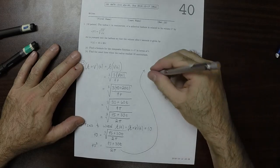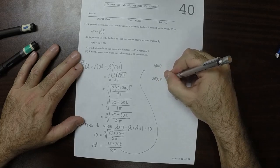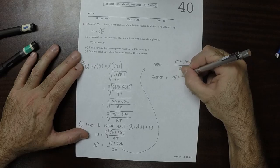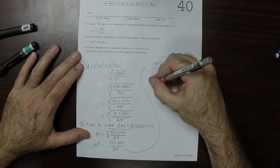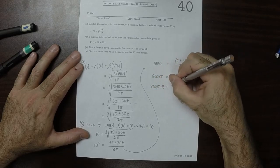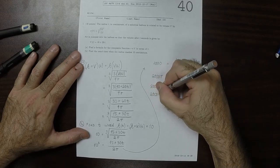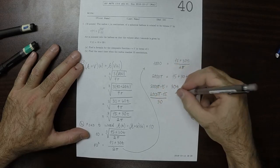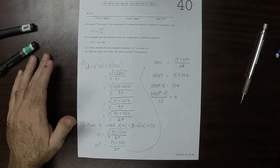So 2000 pi is 15 plus 30T. So 2000 pi minus 15 is 30T. So 2000 pi minus 15 divided by 30 is T. And that's the answer.